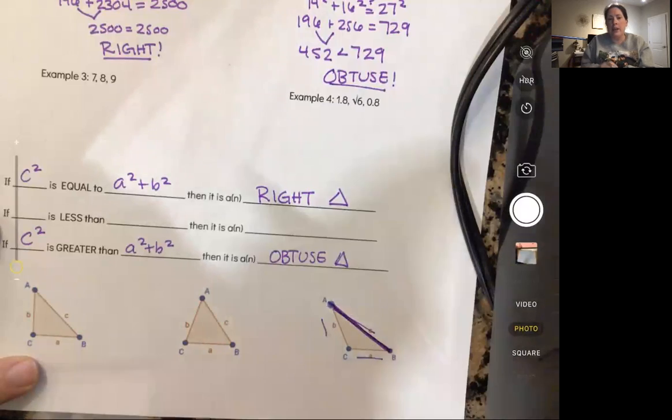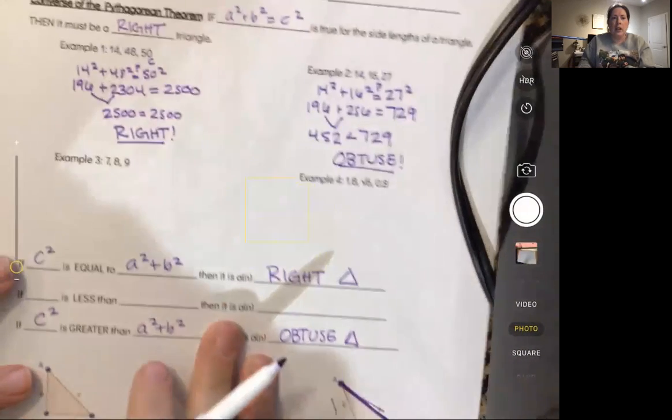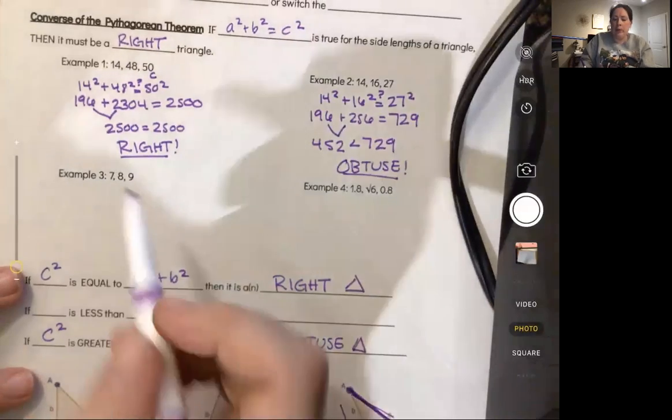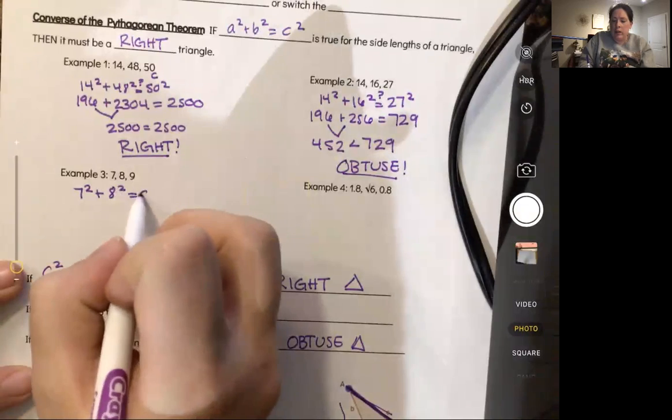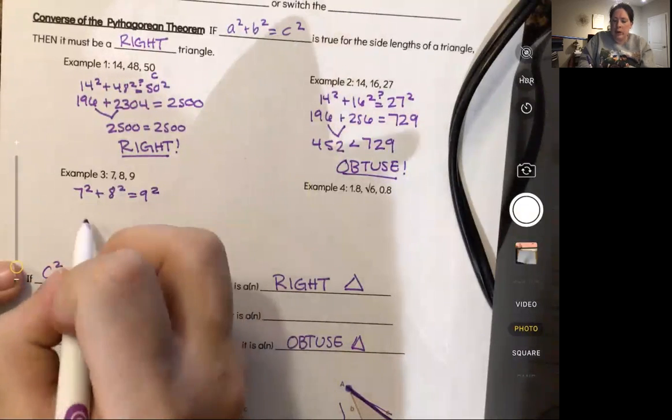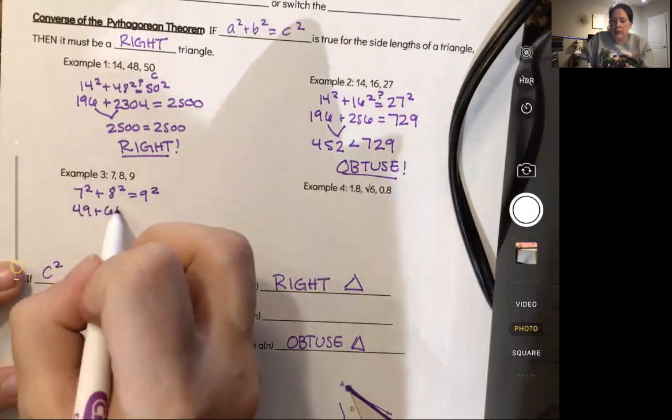Example three here: seven squared plus eight squared, is that equal to nine squared? 49 plus 64, is that equal to 81? Well these two added together make 113 which is greater than 81, so then that would be acute.